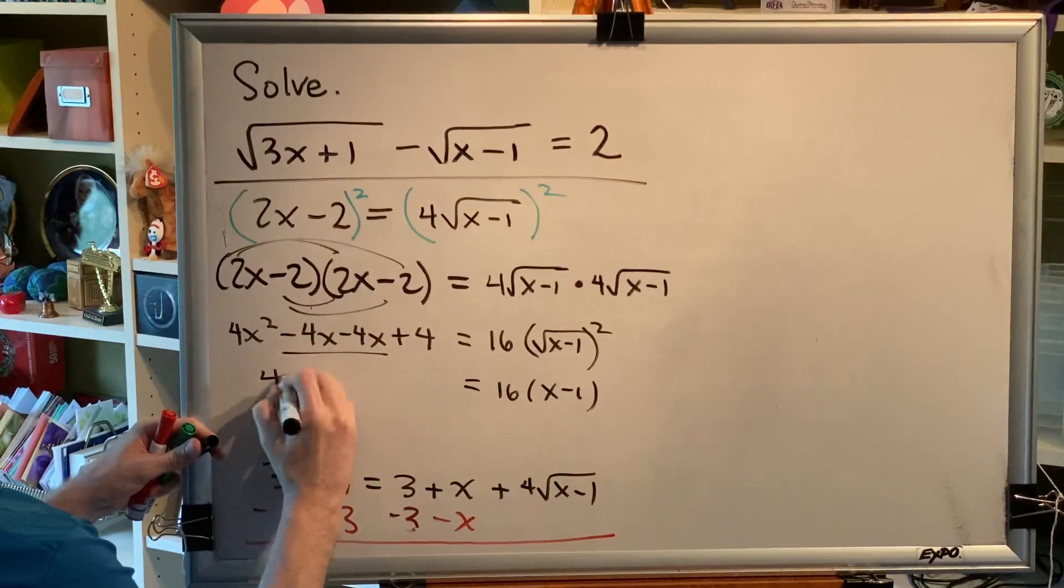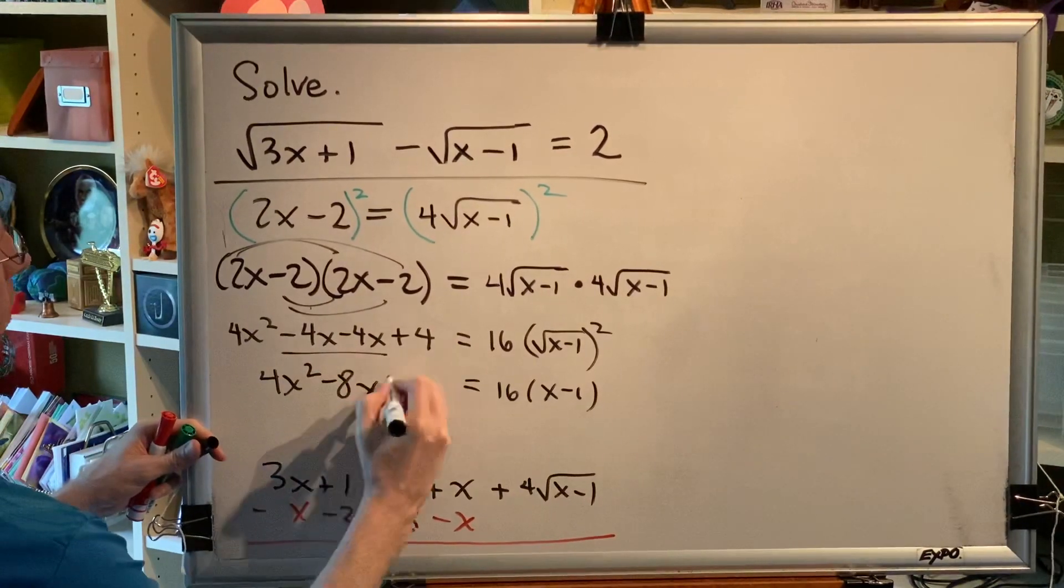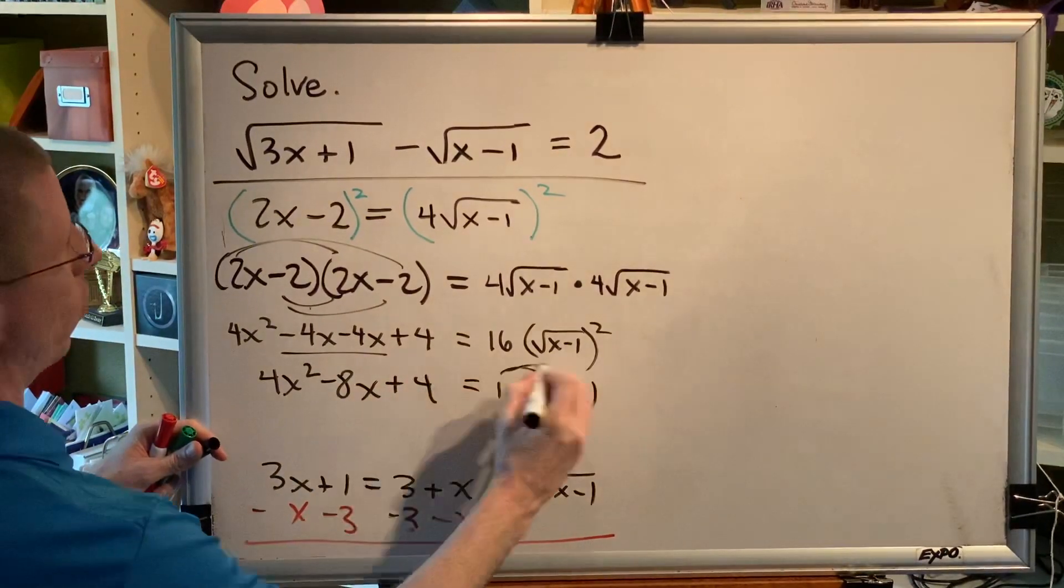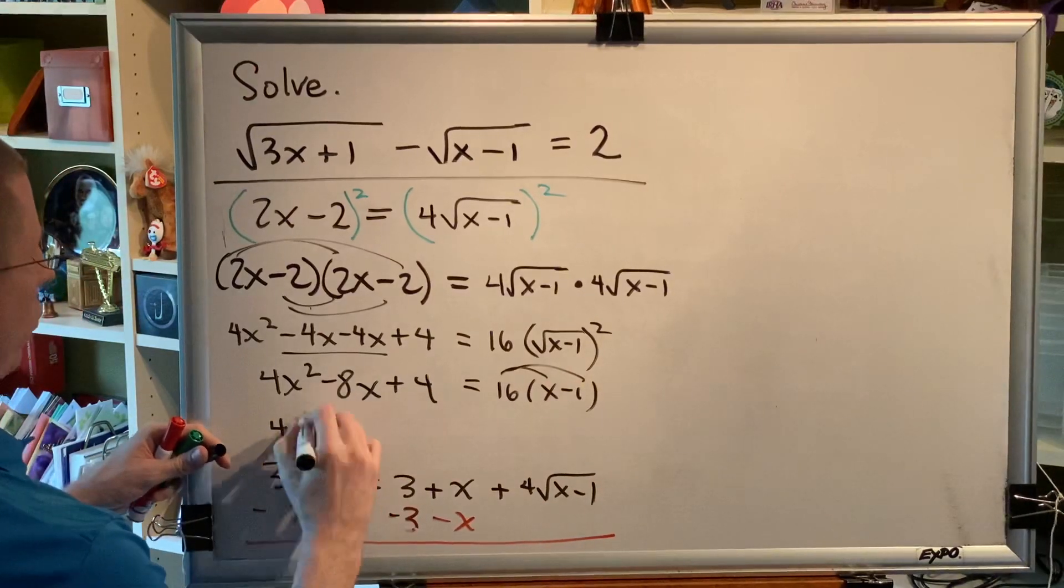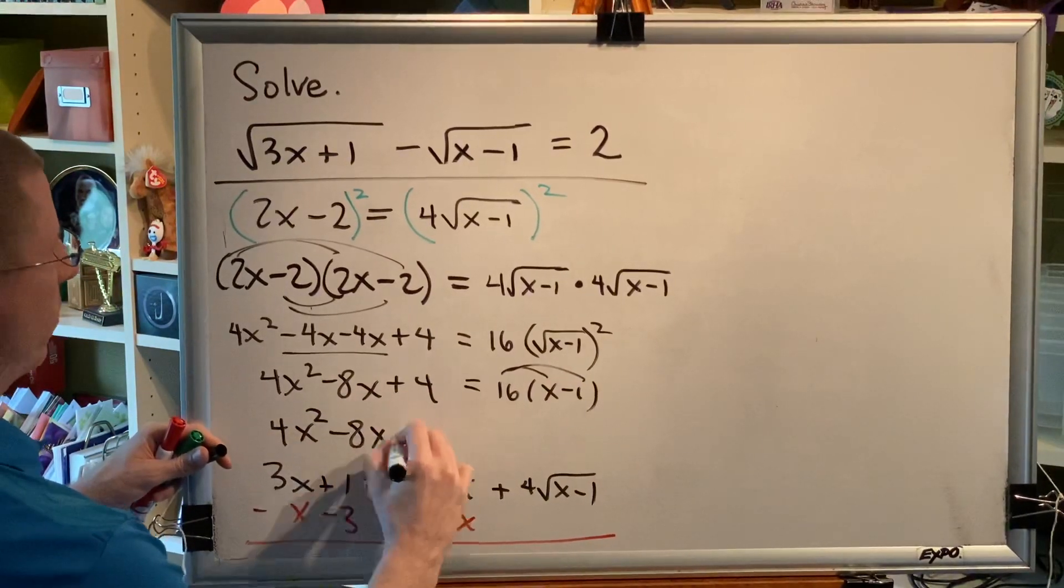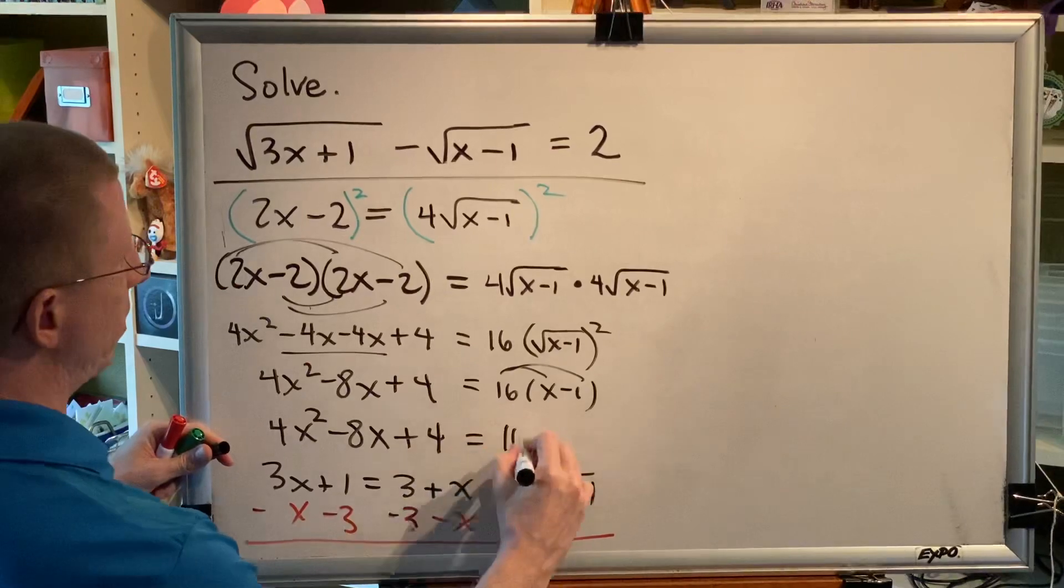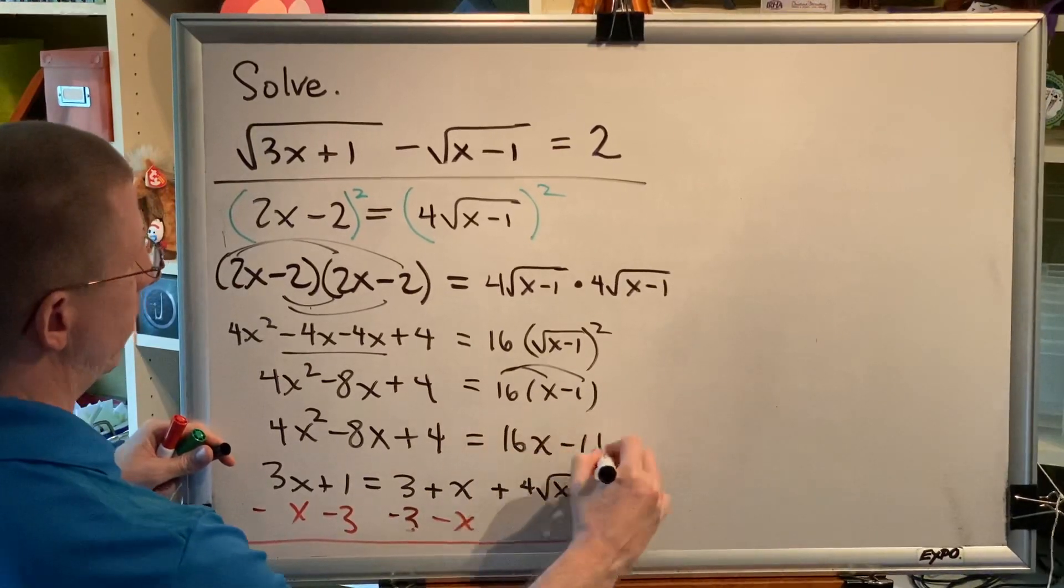Combining like terms, 4x squared minus 8x plus 4. Distribute on the right, 4x squared minus 8x plus 4 equals 16x minus 16.